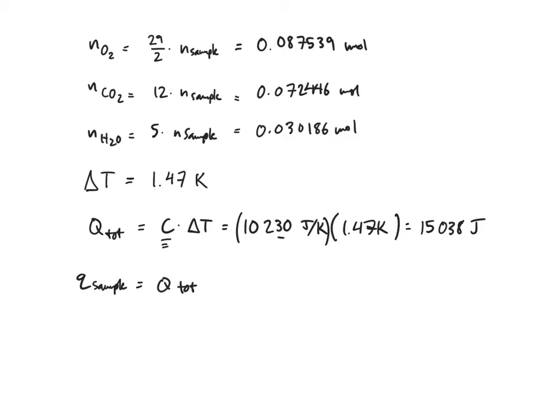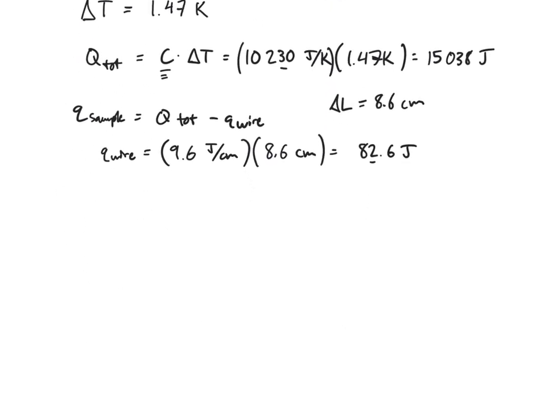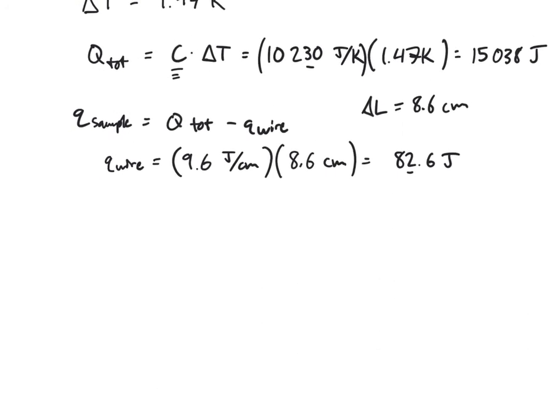Now I need to find the amount of heat released by the sample. That's going to be the amount of heat absorbed by the calorimeter minus the amount of heat generated by the wire. I'm going to do the same calculation that I did in the benzoic acid video: 9.6 joules per centimeter. If I find that my delta L equals 8.6 centimeters of wire combusted, then I can plug right in 8.6 centimeters for my delta L and I calculate 82.6 joules.